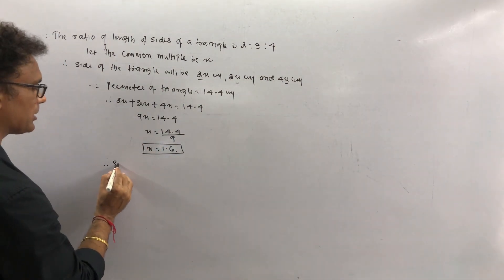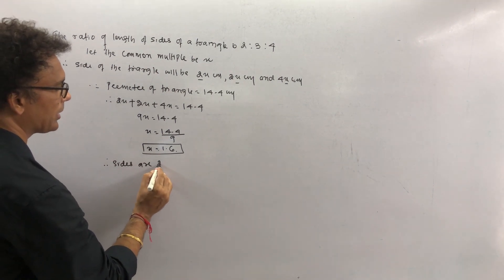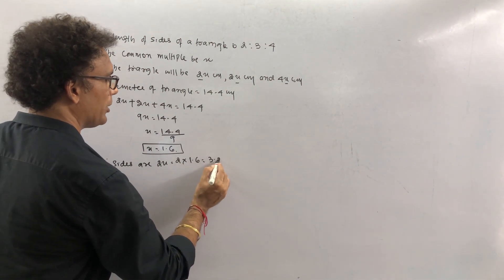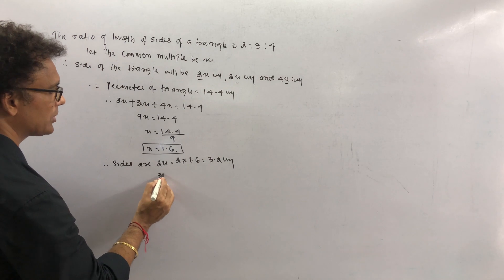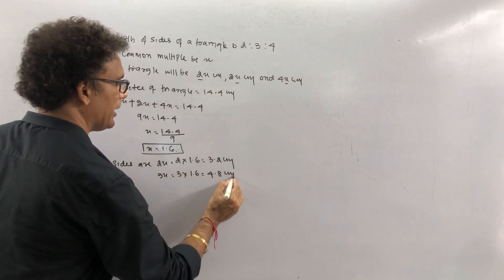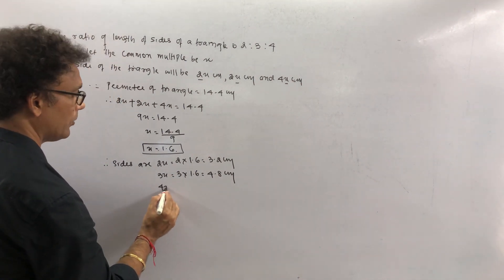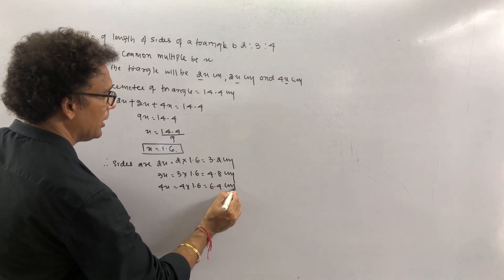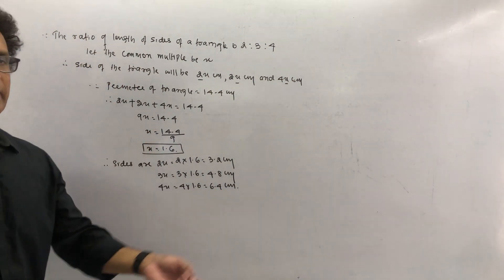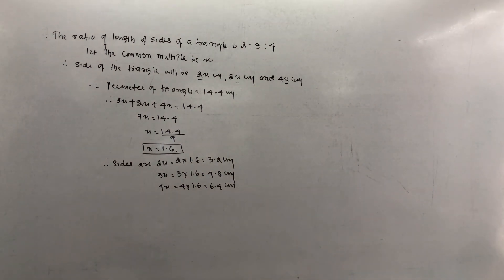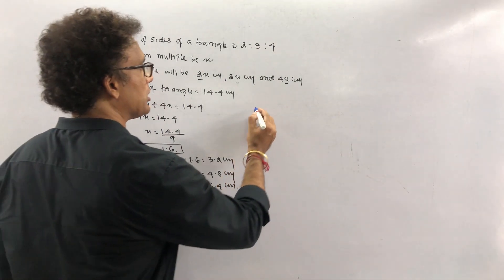Therefore the sides are: 2x = 2 × 1.6 = 3.2 cm; 3x = 3 × 1.6 = 4.8 cm; 4x = 4 × 1.6 = 6.4 cm. So you draw a triangle where the sides are 3.2 cm, 4.8 cm, and 6.4 cm.